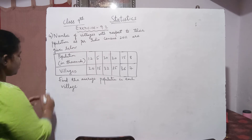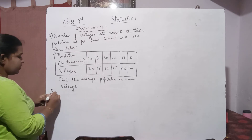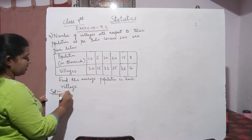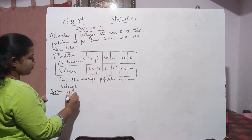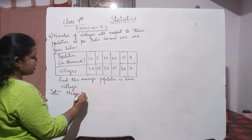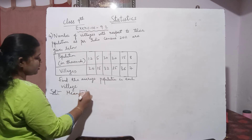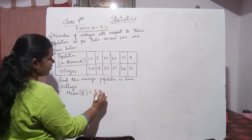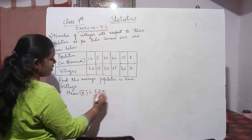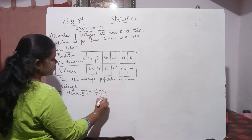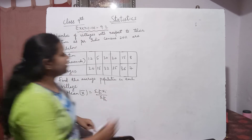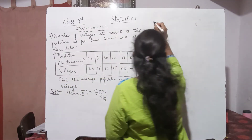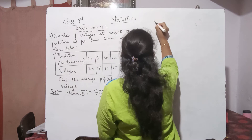To find the average population, we apply the mean formula. Average is nothing but mean. The formula is: x̄ = Σfᵢxᵢ / Σfᵢ. We rewrite the table with population in thousands as xᵢ.